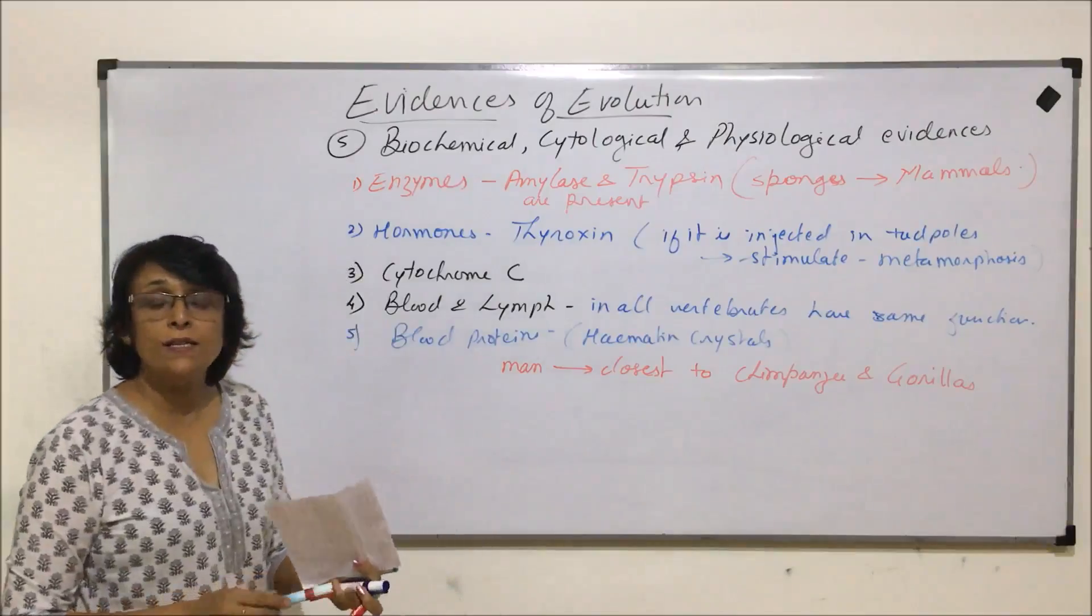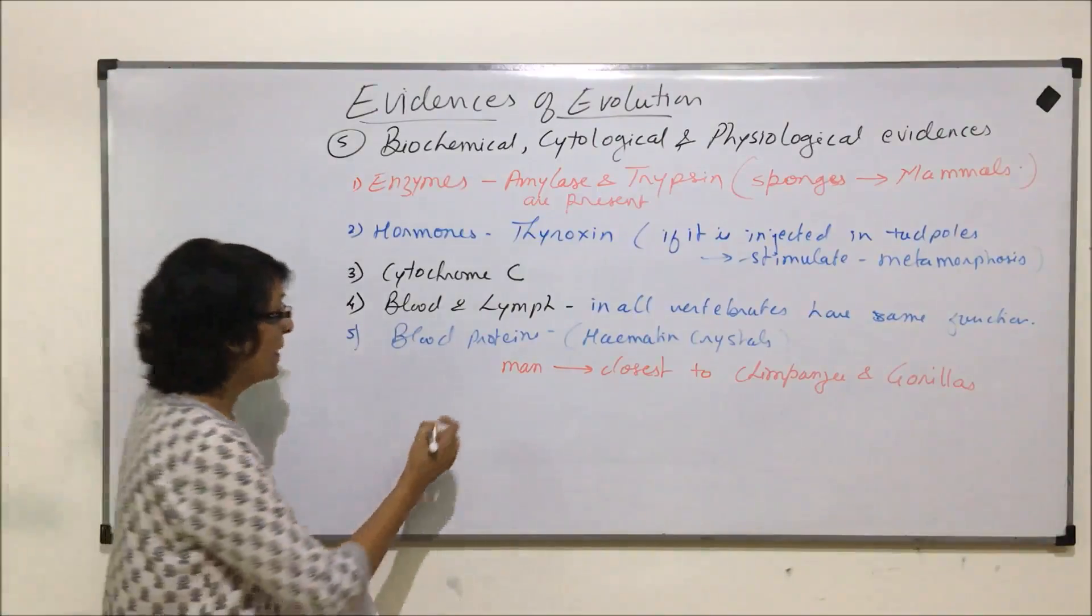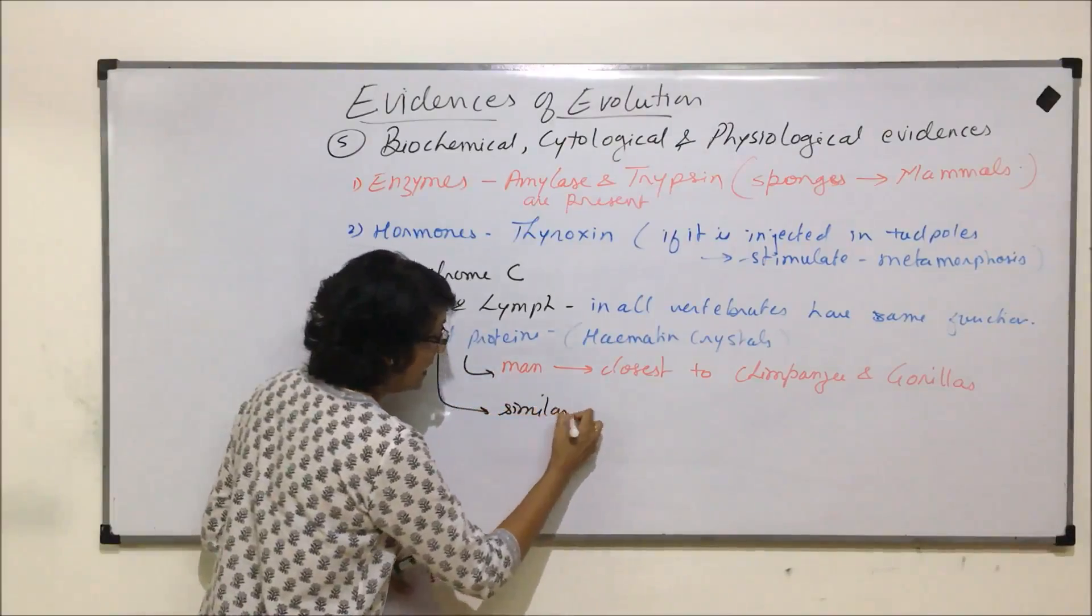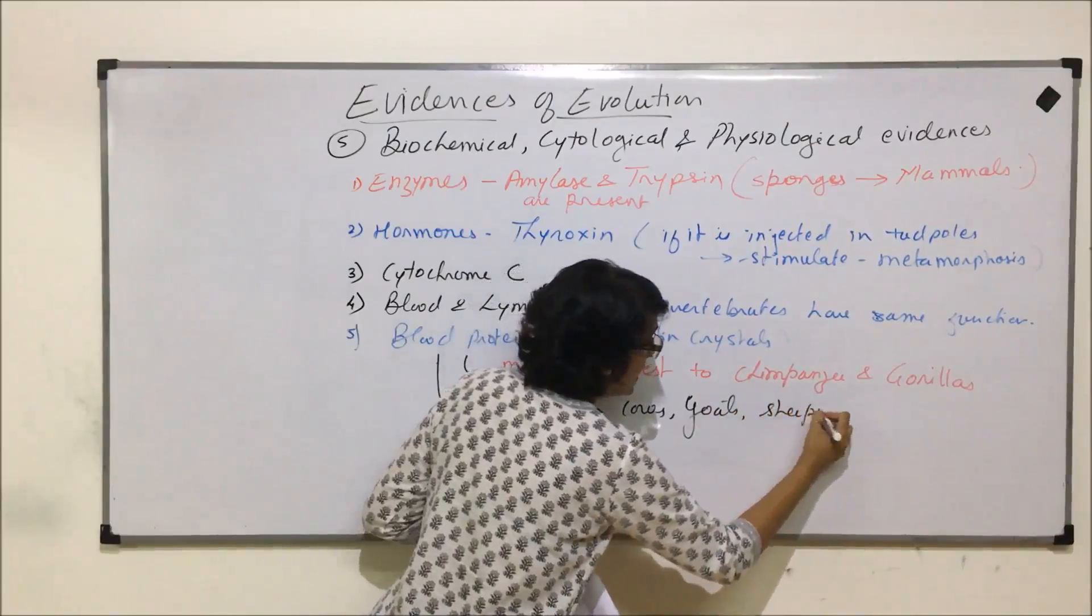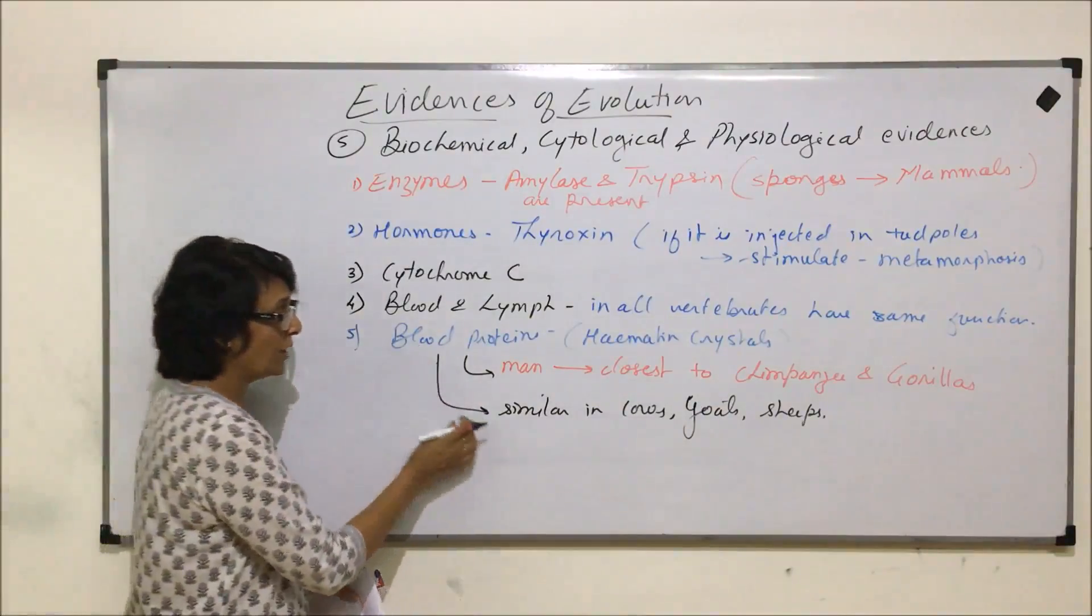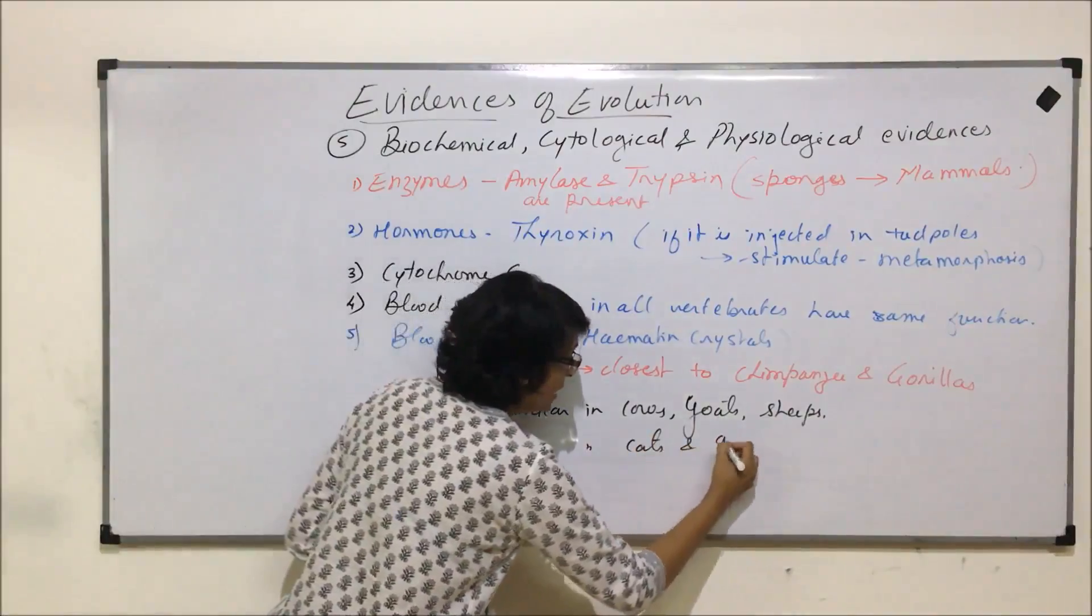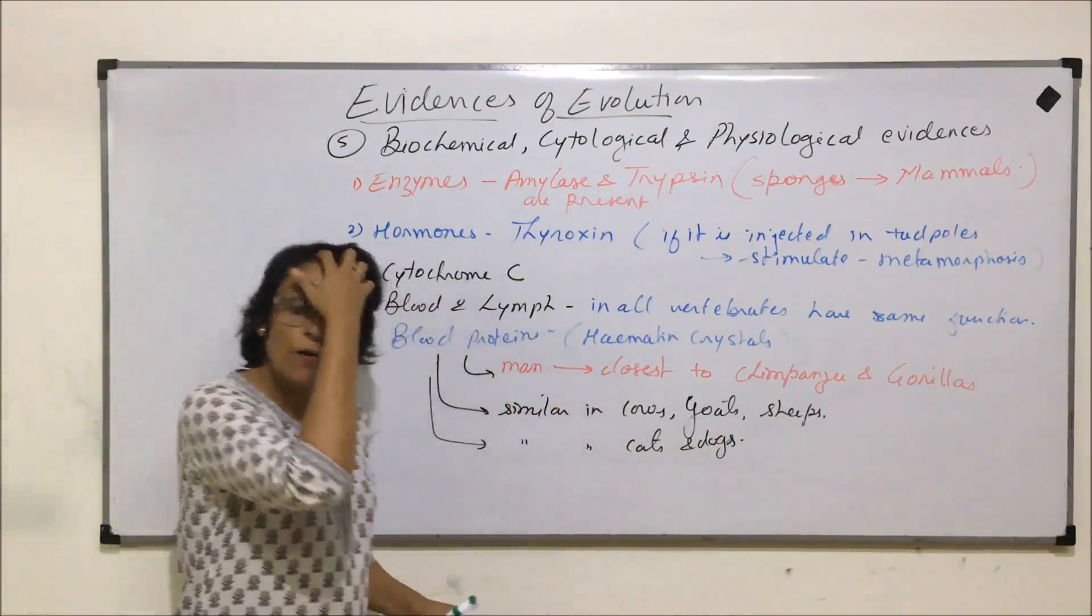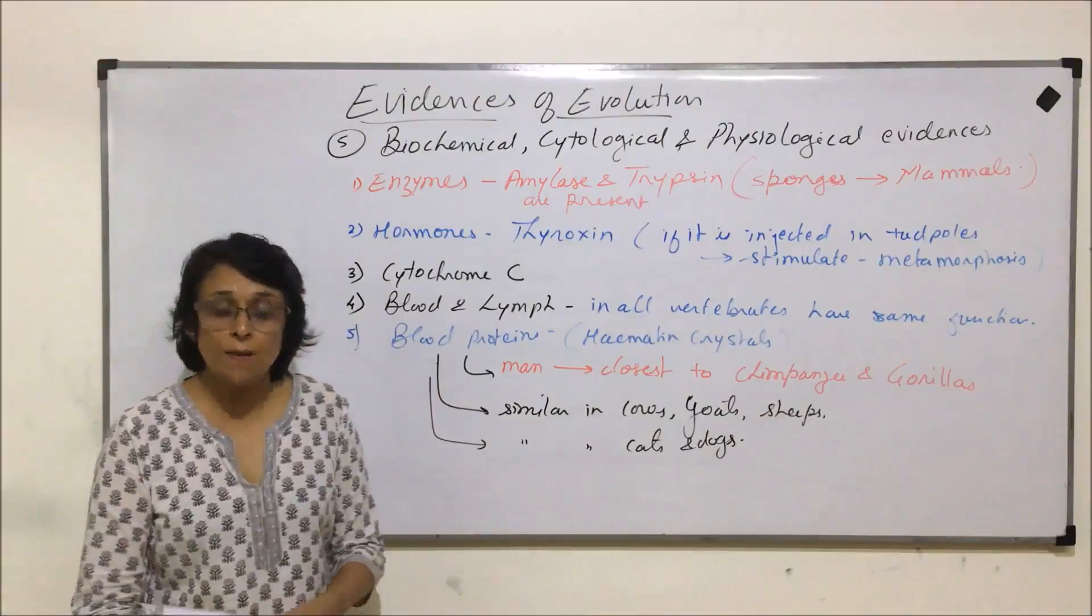So when we compare these proteins, it has been found that our proteins are closest to chimpanzees and gorillas. Then the blood proteins, these proteins are similar in cows, goats, sheep, and similar kinds of organisms. So again when we are comparing, these blood proteins are similar in similar types of organisms. They are also similar in cats and dogs. Cats and dogs, both are carnivores though they are different families now, but probably they have evolved from the same type of ancestors, and that is why they are still sharing the same blood proteins.